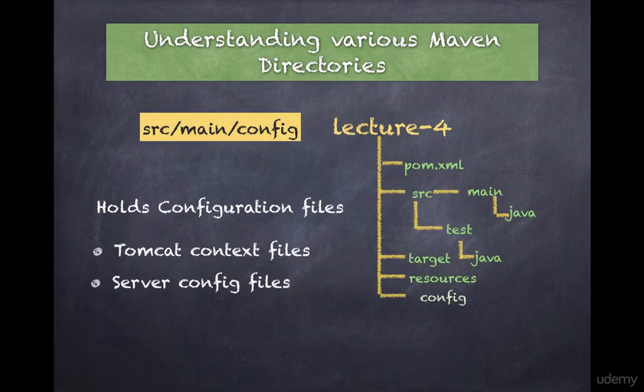The config folder holds configuration files such as the Tomcat context file, James server configuration file, and so on. One thing to keep in mind is that these files do not end up in the generated artifacts such as jar or war.